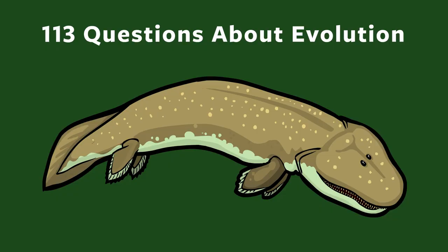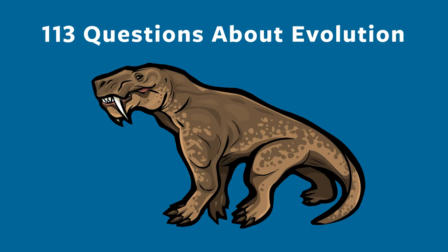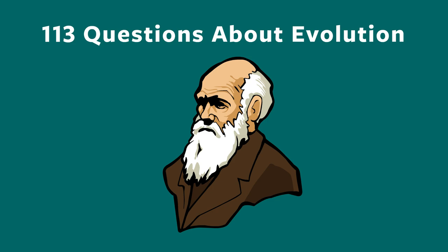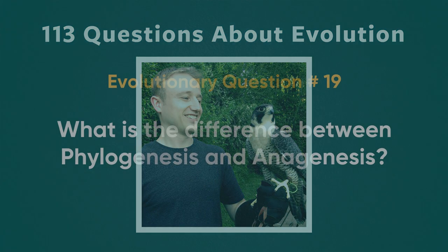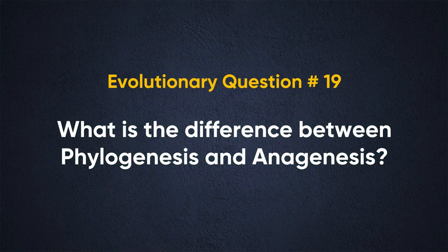113 Questions About Evolution with John Perry. Evolutionary question number 19: What is the difference between phylogenesis and anagenesis?